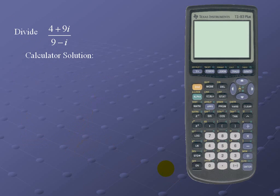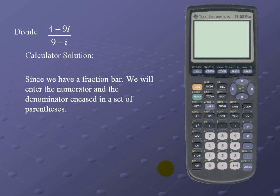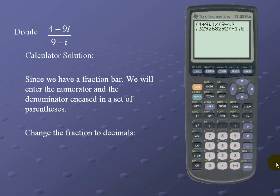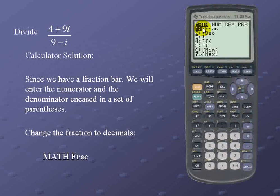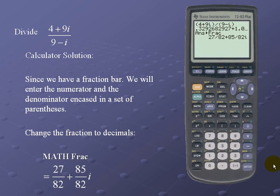Let's look at the calculator solution. Since we're dealing with a fractional bar, we must enter the numerator and denominator each in a set of parentheses. So we have (4 + 9i) divided by (9 - i). We can convert the decimal to a fraction using the option located underneath math — the first option converts to a fraction. Press enter twice for the result: 27/82 + (85/82)i.